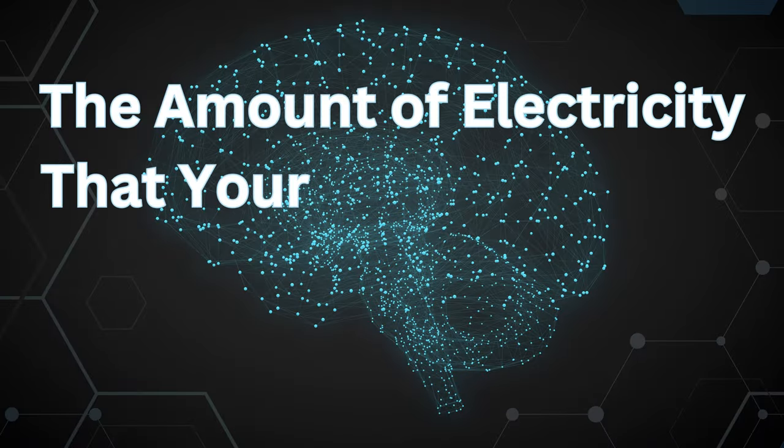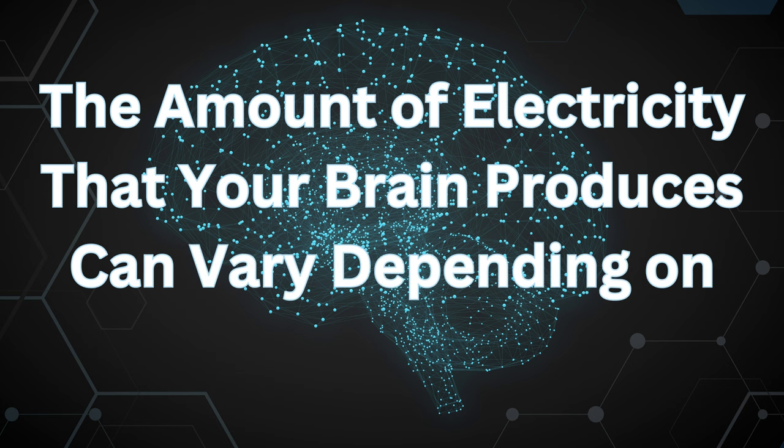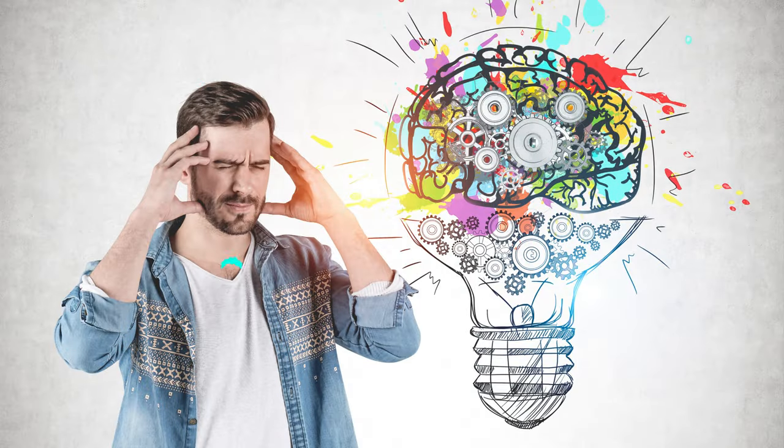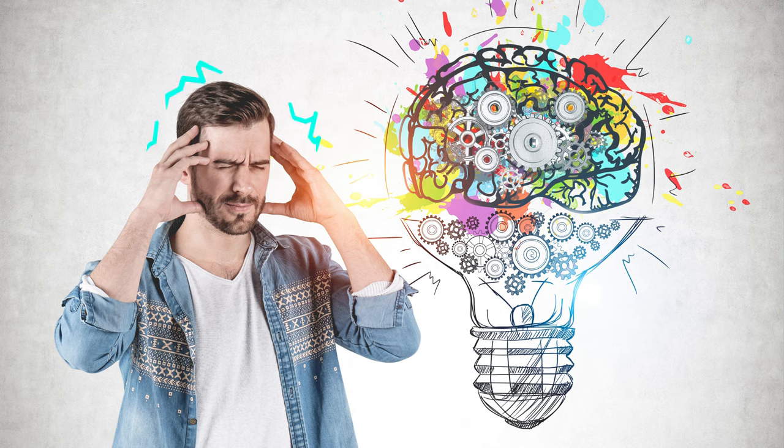The amount of electricity that your brain produces can vary depending on what you are doing. For example, when you are thinking hard, your brain produces more electricity than when you are resting.